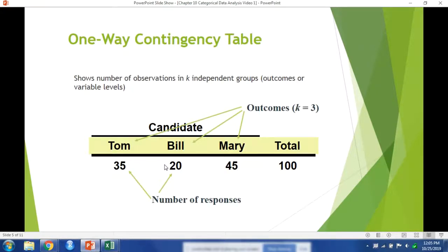So this is what a very simple one-way contingency table looks like. Let's say we had three candidates for president, Tom, Bill, and Mary. So we have k equals three outcomes. Each candidate is an outcome. We have the number of votes for each candidate and they sum to 100. This will give us three proportions or percentages of votes for each candidate that we can use to run our chi-squared test.